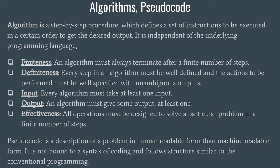An algorithm is independent of the underlying programming language. It is a step-by-step procedure because we cannot solve any problem in one go — we need to approach it slowly and gradually, solving one step at a time. An algorithm defines a set of instructions to be executed in a certain order; you cannot just take any step in a haphazard manner. You have to follow one particular order, and only then shall you get some relevant output.